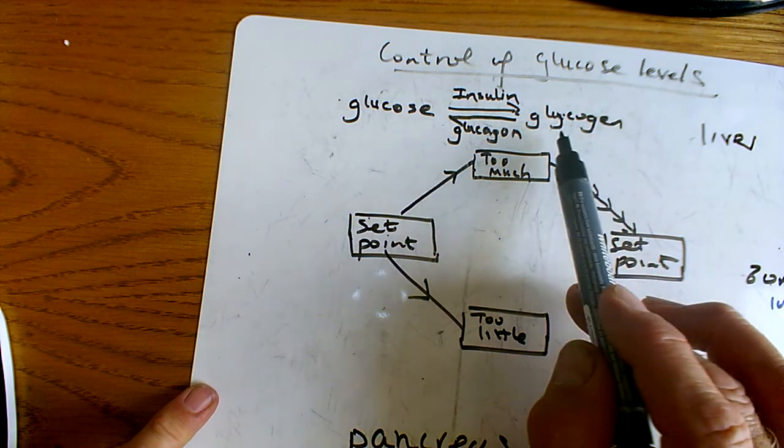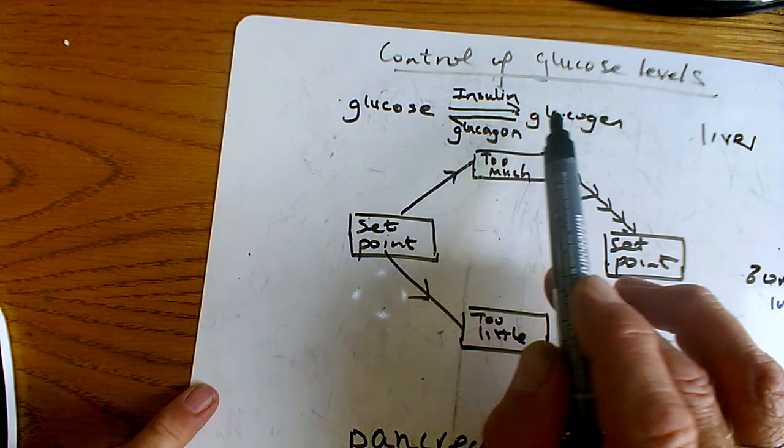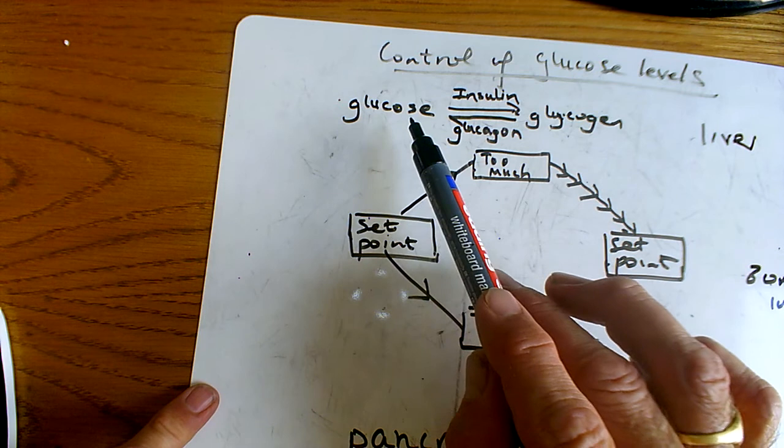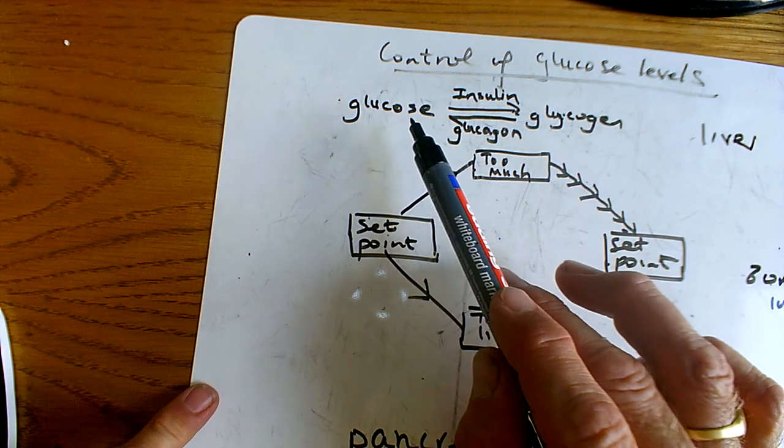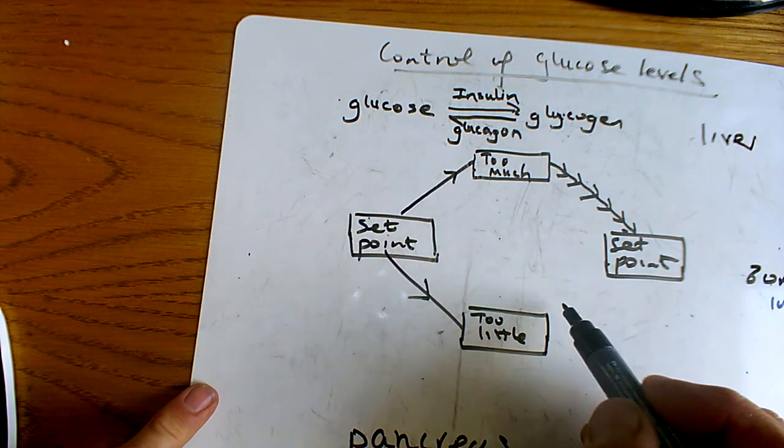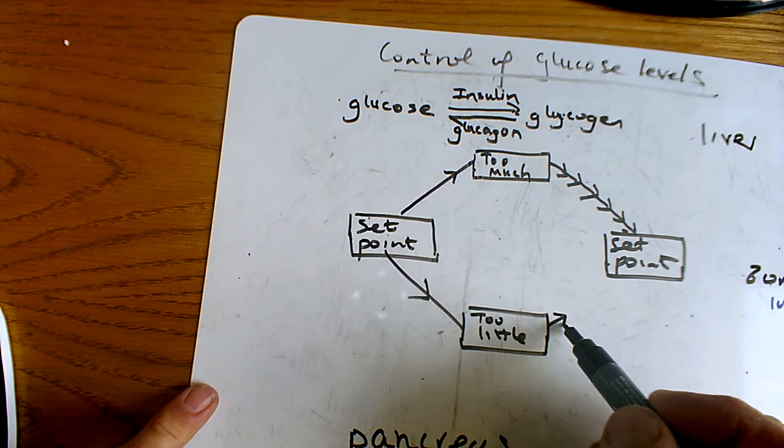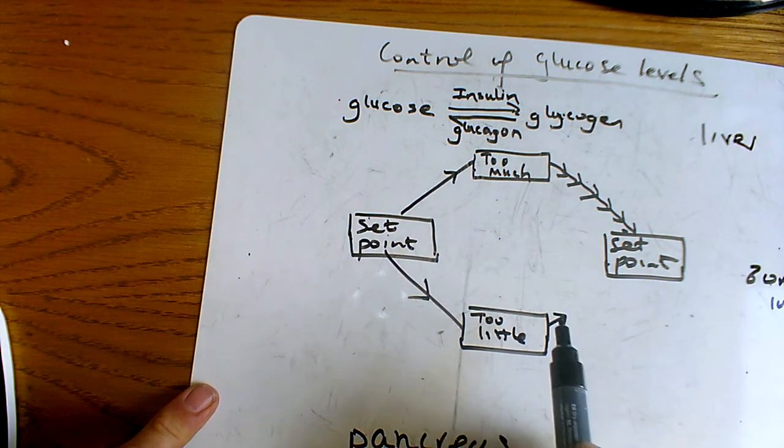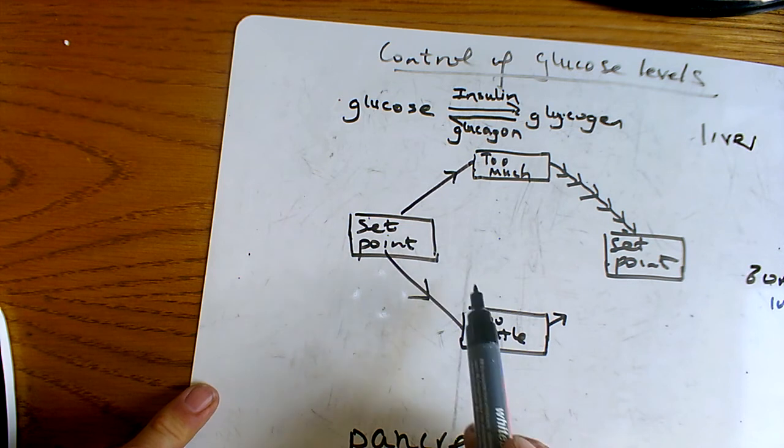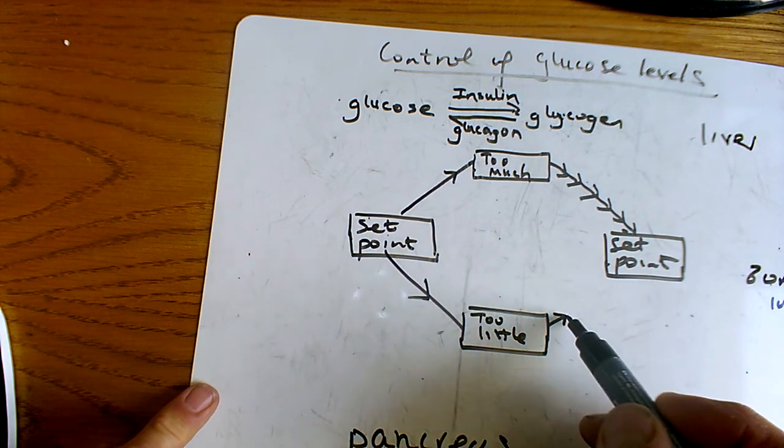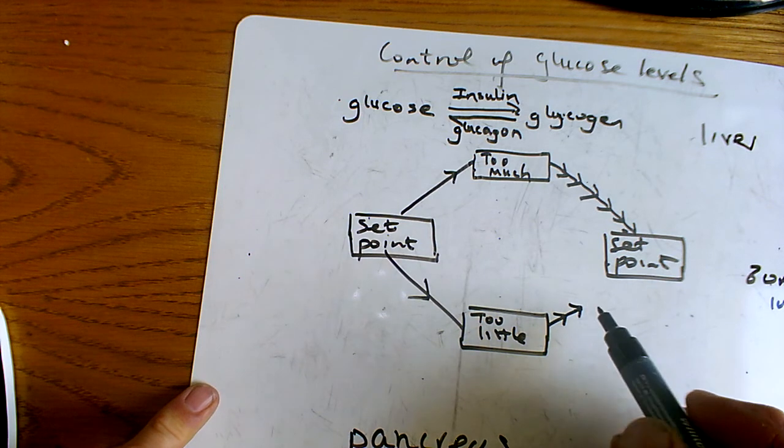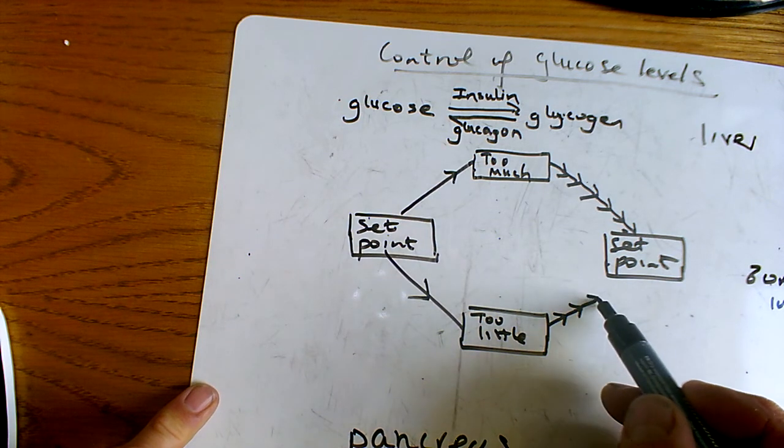...causes the stored glycogen to be converted back into glucose that's pumped into the blood, released into the blood. And what's going to happen? Yeah, your glucose levels start to come back up again. And you can see here they're still quite a way off being where they should be, so glucagon continues to be produced, glucose continues to be released.